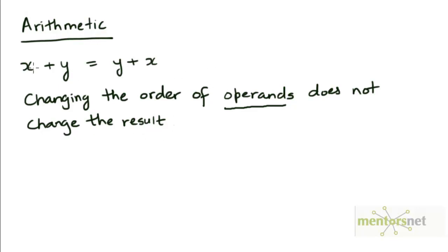The same applies to multiplication. x multiplied with y is the same as y multiplied with x. This property of an operation yielding the same result even if the order of the operands is switched is called the commutative law.